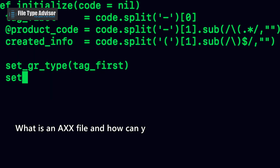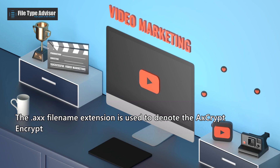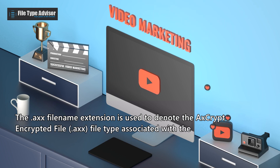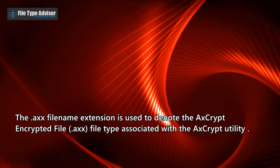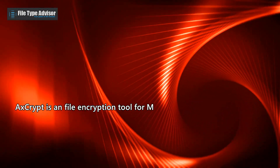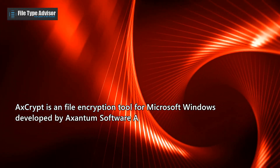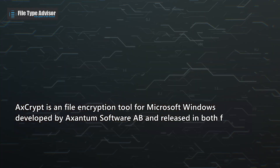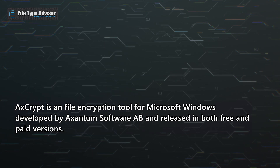What is an AXX file and how can you open it? The .axe filename extension is used to denote the AXCrypt encrypted file type associated with the AXCrypt utility. AXCrypt is a file encryption tool for Microsoft Windows developed by Xantum Software AB and released in both free and paid versions.